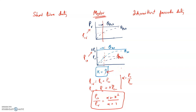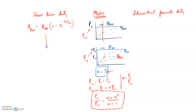For short time duty, the governing equation is: θPR = θSS · (1 - e^(-TR/τR)), where TR is the run duration and τR is the rising time constant. The motor temperature rises to a certain value during the on-period, then decreases back to ambient during the off-period.